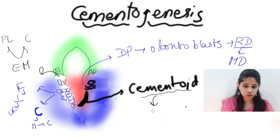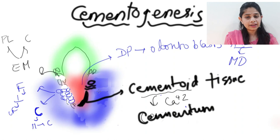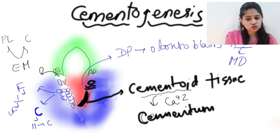One more important aspect: during deposition of the cementum, the superficial layer does not completely get calcified. It still remains as an uncalcified cementoid tissue along with cementoblast cells.